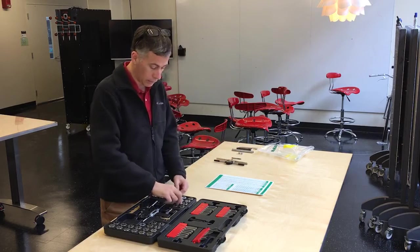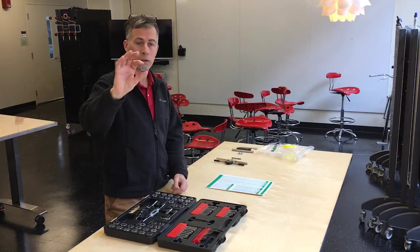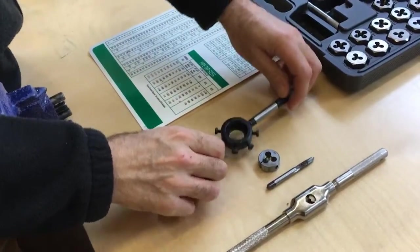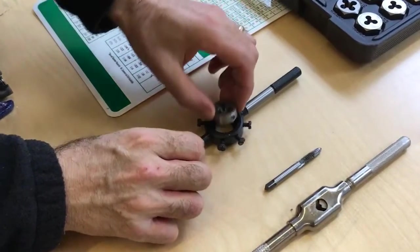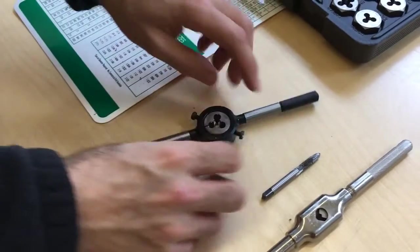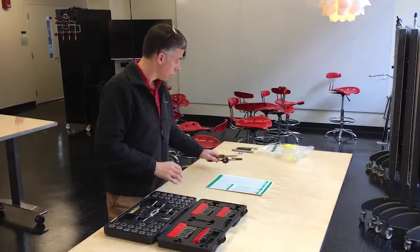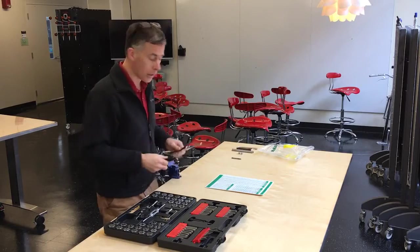And a die looks like this, and it is made so that it will create threads on the outside of a piece of stock. So this will make male threads. And we have a wrench to hold each of them, a tap and a die wrench.